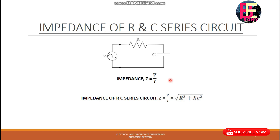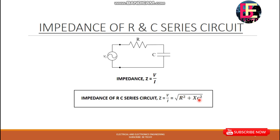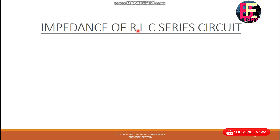This is XC squared — the capacitive reactance. In our equation, if we have R and XC, the resistance is R and XC is the capacitive reactance. That means if we write the R and C together, we then move to R, L, C. That is the impedance of the R, L, C series circuit.